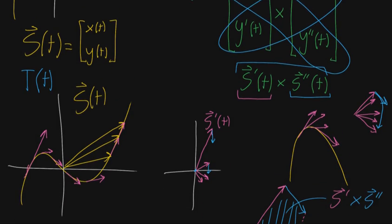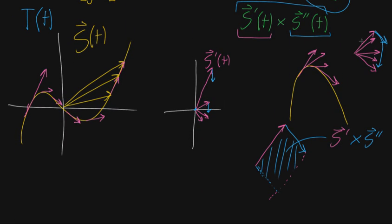And the way we started to understand that is we say, the function parametrizing the curve, s(t), produces vectors whose tips trace out that curve itself. And now if you think about how one tip moves to the next, the direction that it needs to go for that tip to move to the next one, that's what the first derivative tells you.